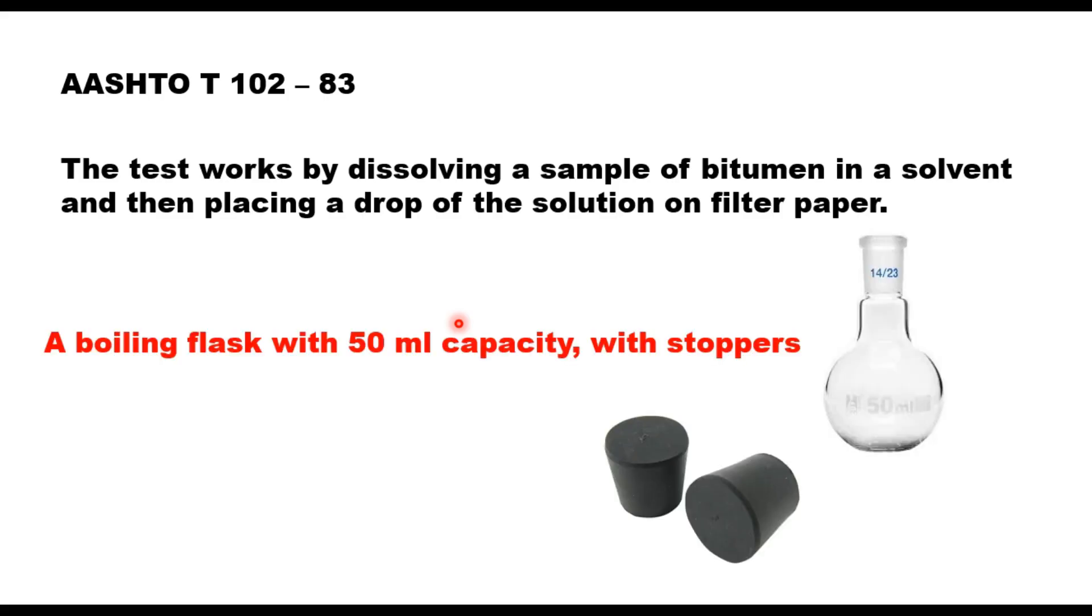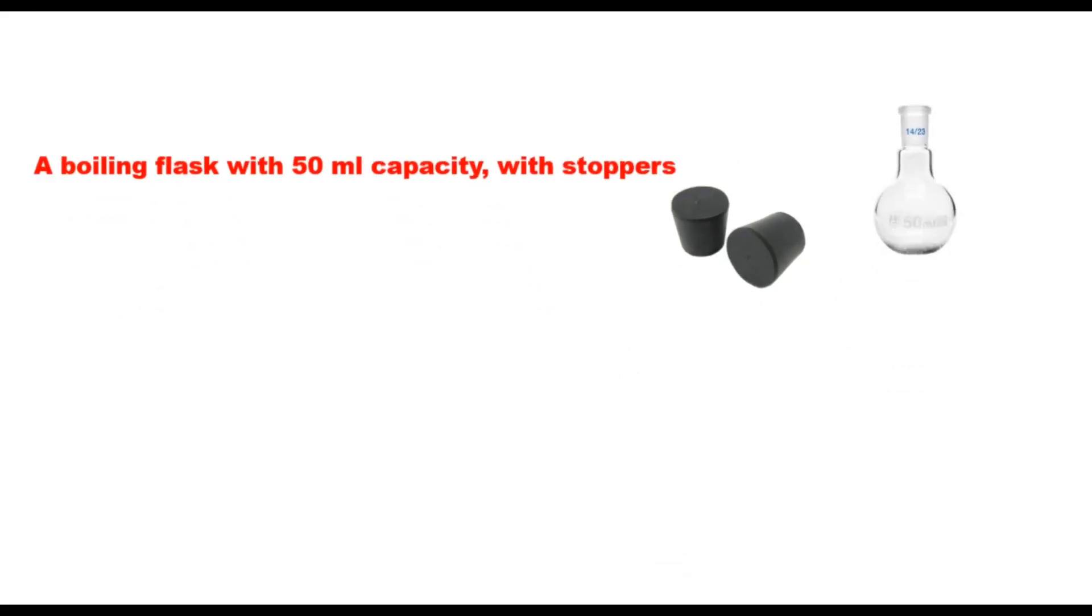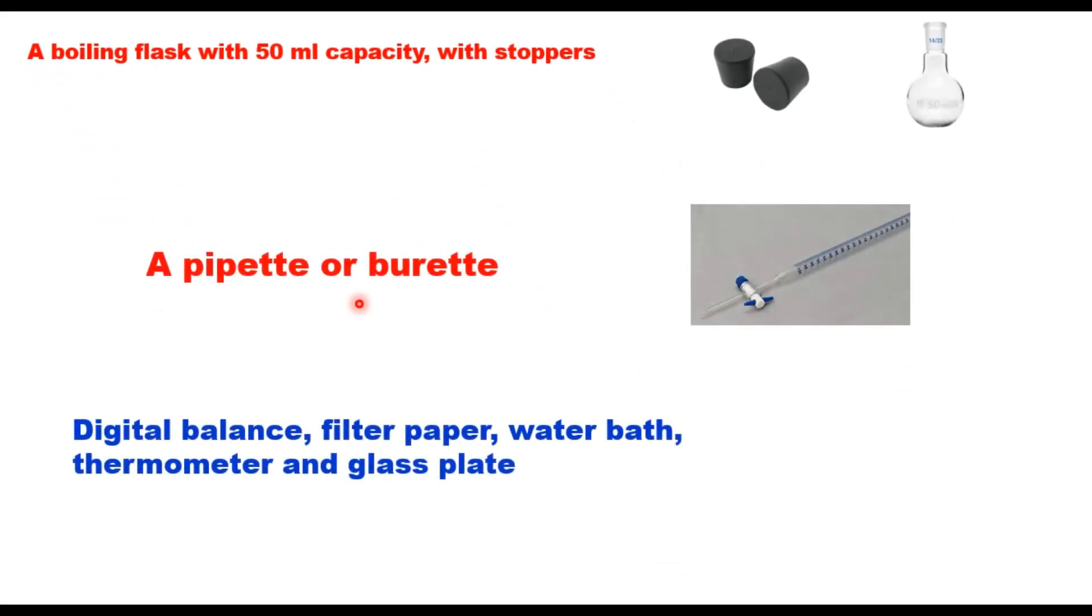The apparatus which you need: a boiling flask with 50 ml capacity with stopper, a pipette or burette to add the solvent to the bitumen, then you need digital balance, filter paper, water bath, thermometer, and glass plate.